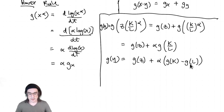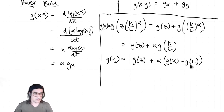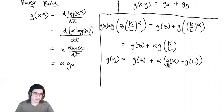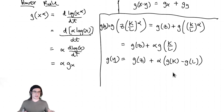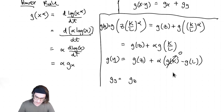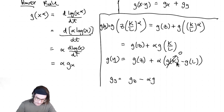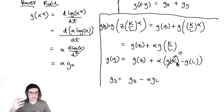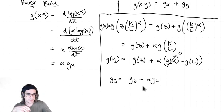Since land is in fixed supply, G_K equals zero. So we simplify to G_Y = G_Z minus alpha·G_L. Now we can really see: the effect on Y is just the net difference between the effect of Z and the effect of L. This is basically our most important result here — it tells us exactly how technology growth and population growth balance against each other in determining per capita income growth.